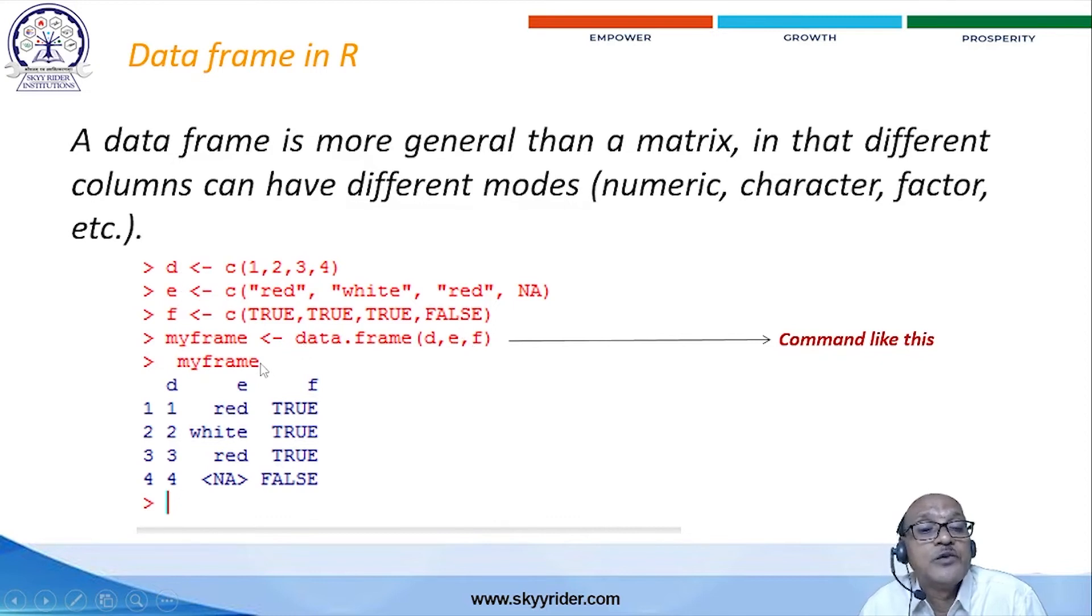Now, running on my frame, the output is like this. D, E, F are the variable names. Each variable will get like this. D is equal to 1, 2, 3, 4.